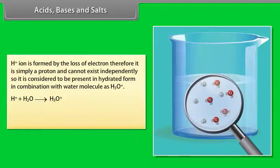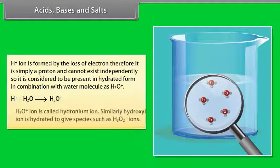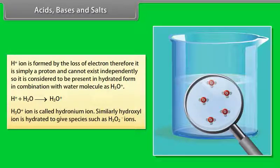The H⁺ ion is formed by the loss of an electron; therefore it is simply a proton and cannot exist independently. It is considered to be present in hydrated form in combination with a water molecule as H₃O⁺. The H₃O⁺ ion is called the hydronium ion. Similarly, the hydroxyl ion is hydrated to give species such as H₃O₂⁻ ions.